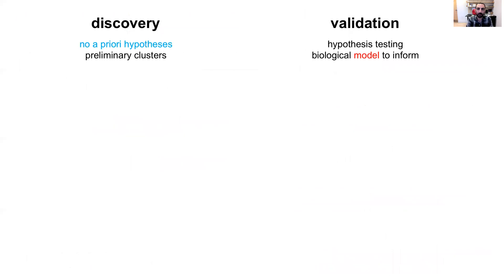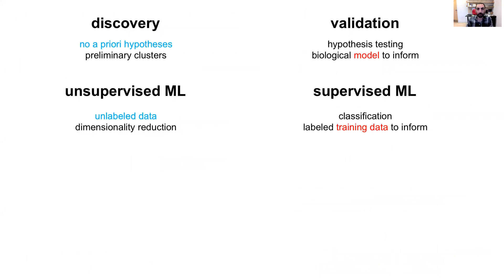The question is how do we delimit species — particularly cryptic species — using genetic data in taxa where we can't use methods that over-split? That is why I got into machine learning. Coincidentally, there are two different types of machine learning: unsupervised, where data are unlabeled and the approach is essentially dimensionality reduction; and supervised, which are classification tools that use a labeled training dataset to inform an unknown dataset. You can see the parallels between discovery and unsupervised, and validation and supervised approaches — and this is how I approach species delimitation using machine learning.